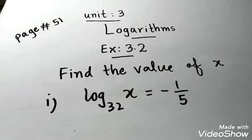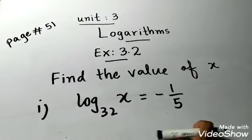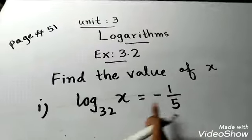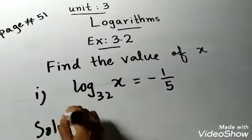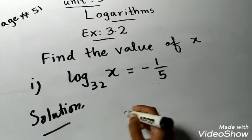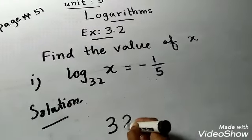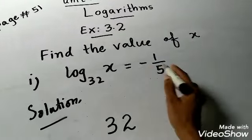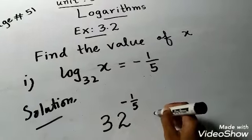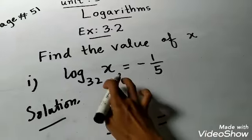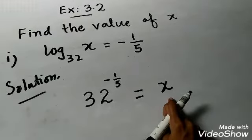Now students, the question says: find the value of x. This is in logarithmic form and you need to find x's value. First, let's convert this question to exponential form. Here the base is 32, and the exponent given is minus 1 upon 5, so you will write 32 to the exponent minus 1 upon 5 is equal to x.